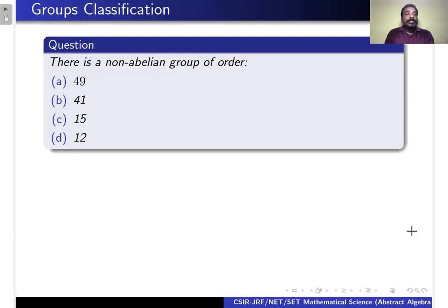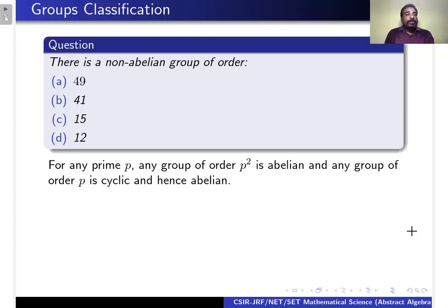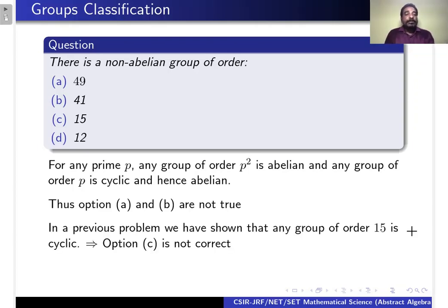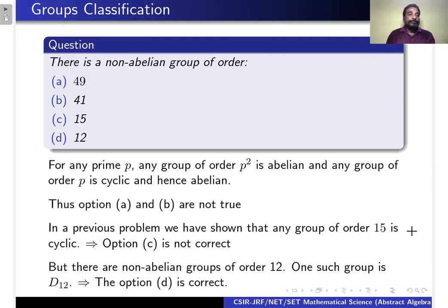The next question is: there is a non-abelian group of order — the options are 49, 41, 15, and 12. For any prime P, any group of order P² is abelian, so the group of order 49 is abelian. Any group of order P is cyclic and therefore abelian, so any group of order 41 is abelian. Options A and B are not true. From the previous problem, any group of order 15 is cyclic and hence abelian, so option C is not correct. But there are non-abelian groups of order 12 — one such group is D12. Therefore, option D is correct.